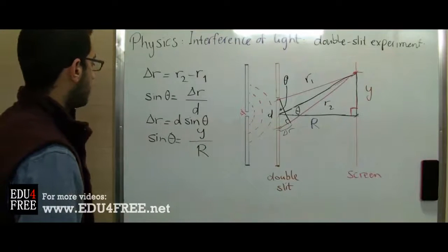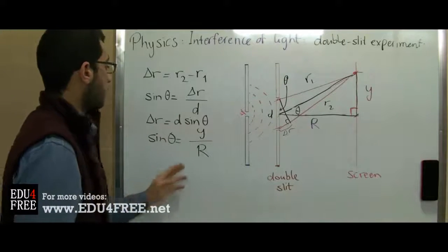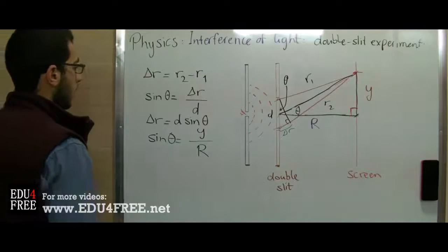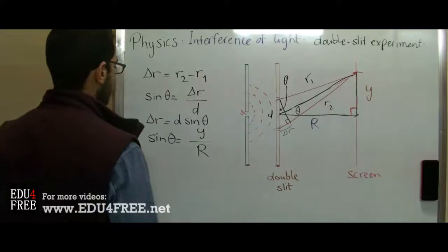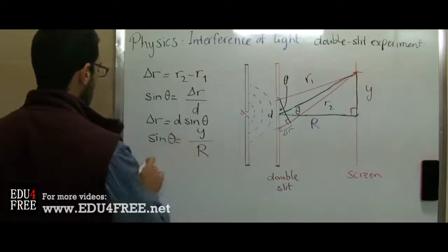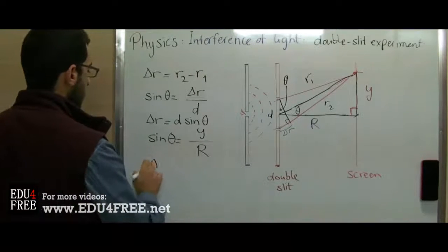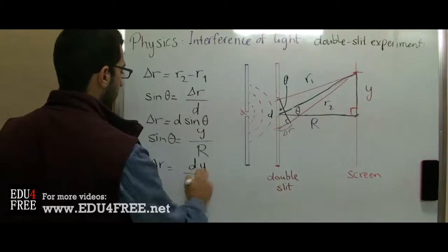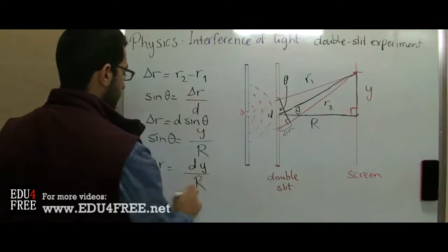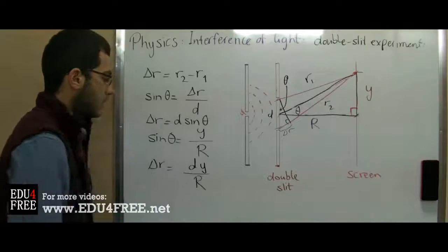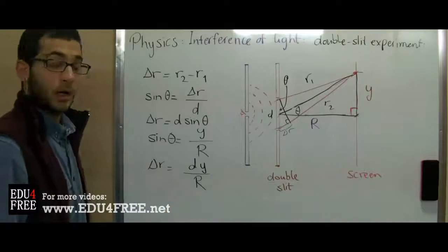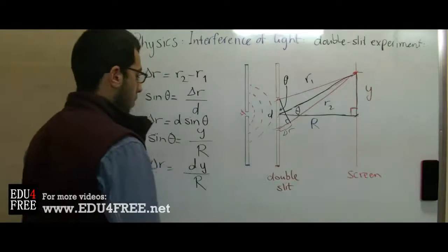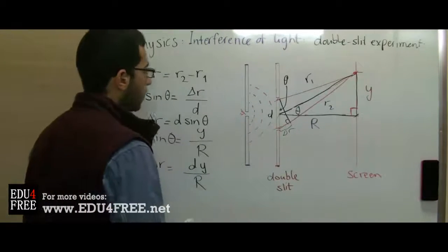From this we can say that delta r equals d times y over R, and therefore y equals R times delta r over d.